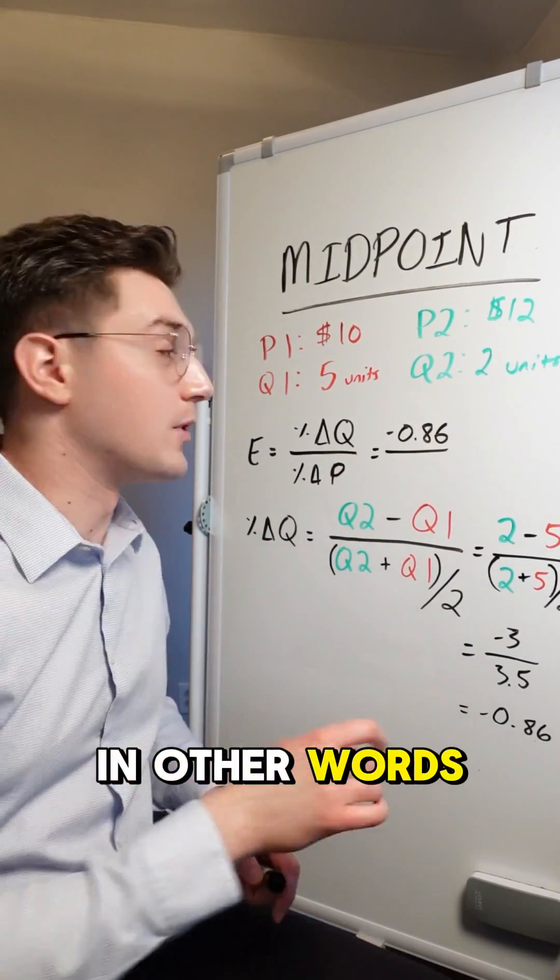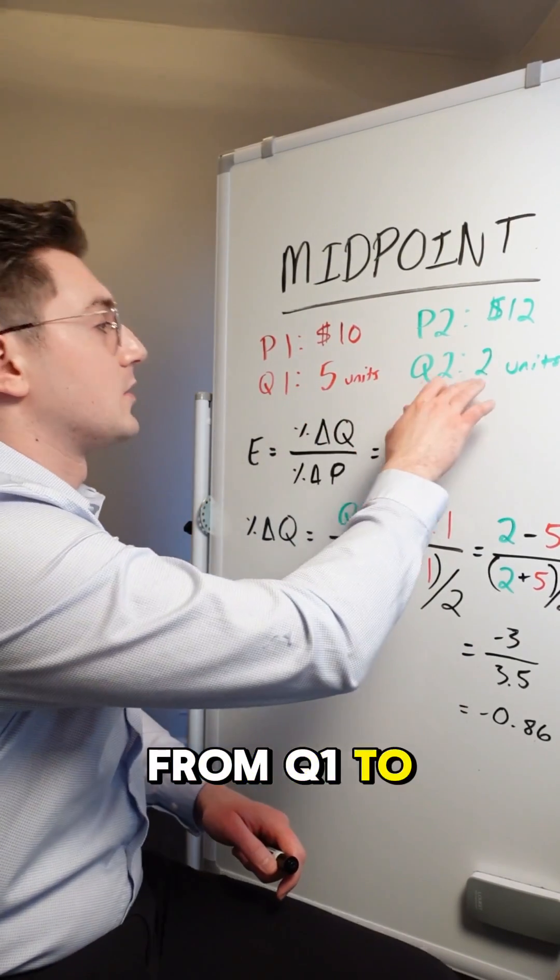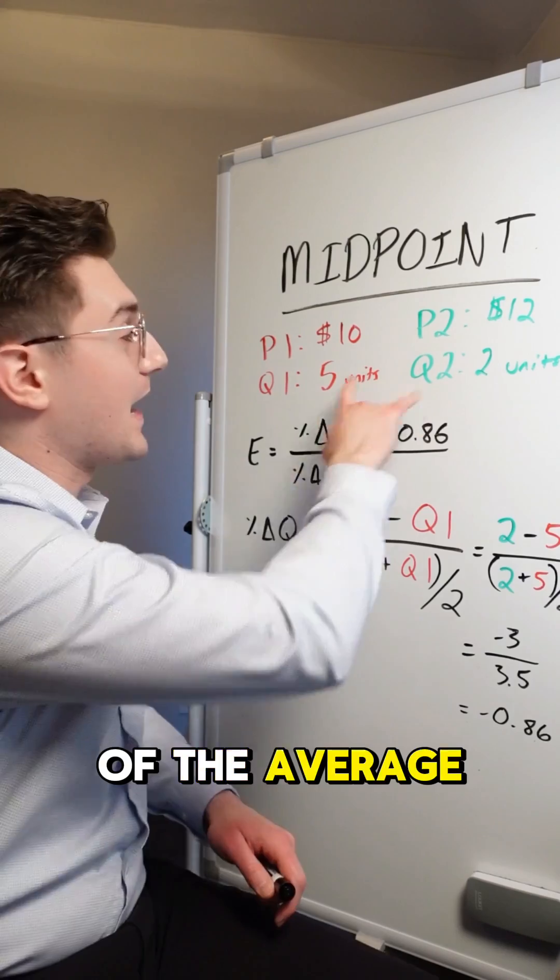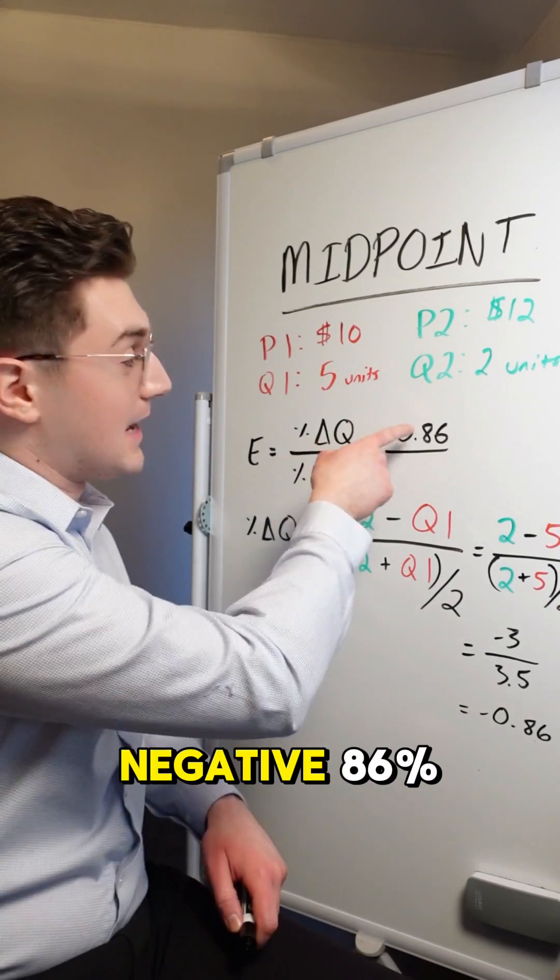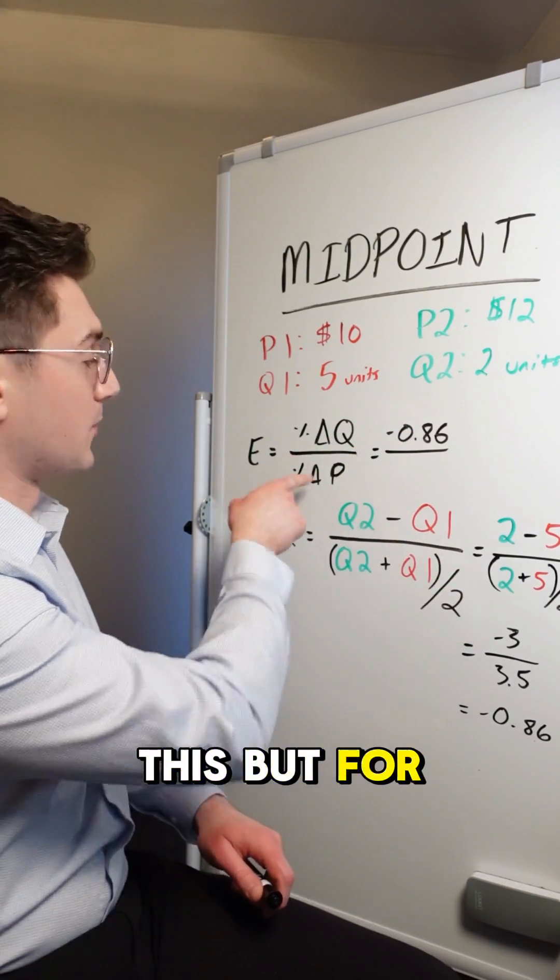which we'll plug in right up here. In other words, our percent change from Q1 to Q2, basing it off of the average of these two values is negative 86%.